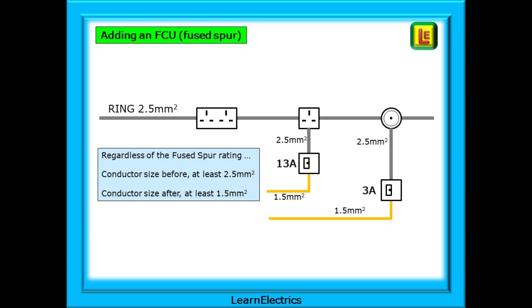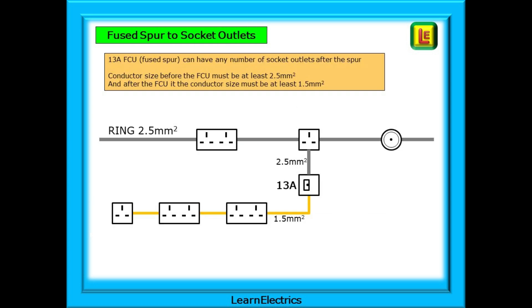Just to reiterate this important rule on cable size: regardless of the fused spur rating, conductor size before the FCU must be at least 2.5mm and conductor sizes after at least 1.5mm. If we are installing a fused spur to supply socket outlets, then we use a 13 amp FCU or fused spur and now it can have any number of socket outlets after the spur. Once again, the conductor size before the FCU must be at least 2.5mm and after the FCU, the conductor size must be at least 1.5mm.